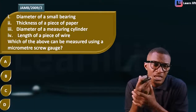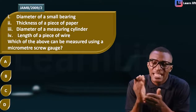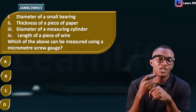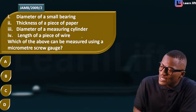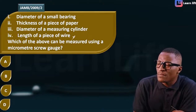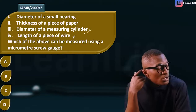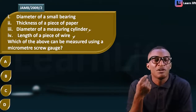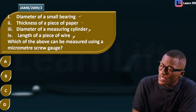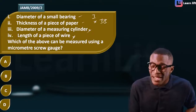Let's take a JAMB past question — 2009, question 2. The options are: diameter of a small bearing ball, thickness of a piece of paper, diameter of a measuring cylinder, length of a piece of wire. Which of these can be measured with the micrometer screw gauge? Analysis: length of a wire uses a meter rule — out. Diameter of a measuring cylinder is for measuring volume — out. Diameter of a small bearing ball — yes. Thickness of a piece of paper — yes.